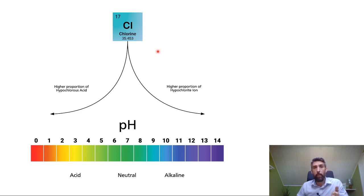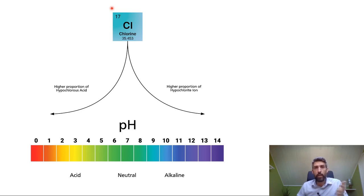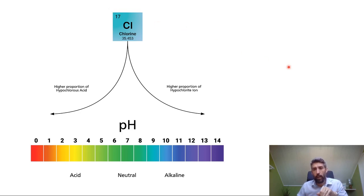Sodium hypochlorite has a pH level of around 13, and calcium hypochlorite has a pH level of around 11. So when you're introducing these chlorine donors into the pool, either one is going to push the pH level up. That's why, if you're using these alkaline disinfectants, you always need to add acidic substances to bring the pH level back down to a range between 7.2 and 7.6.